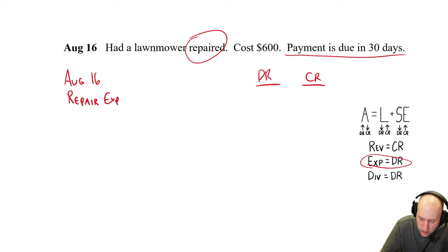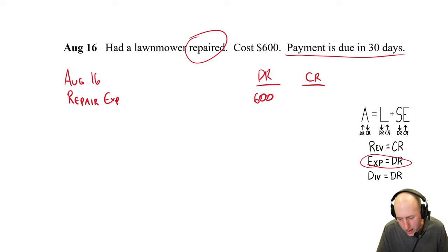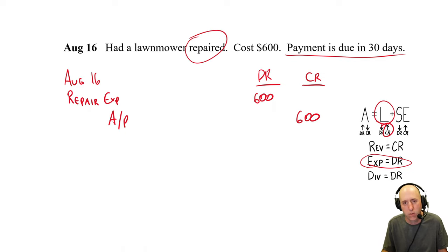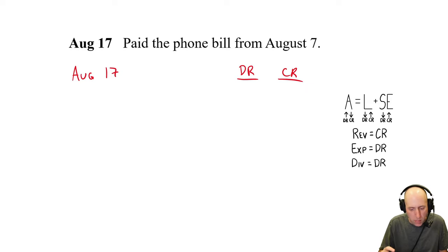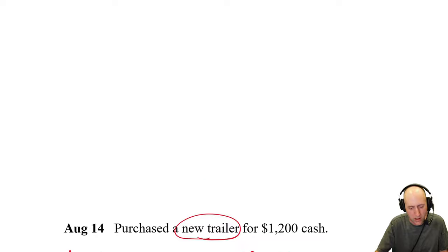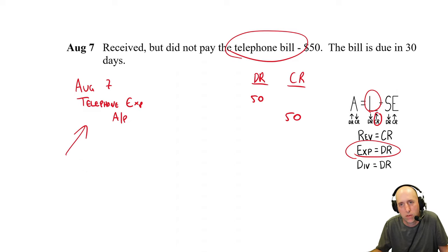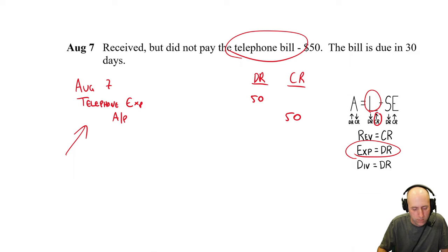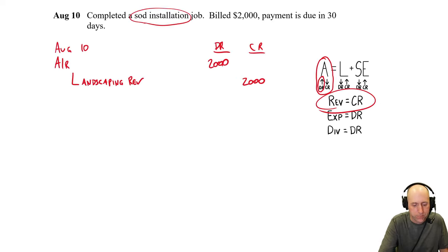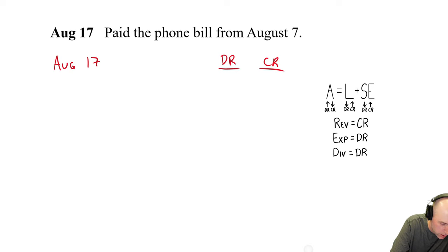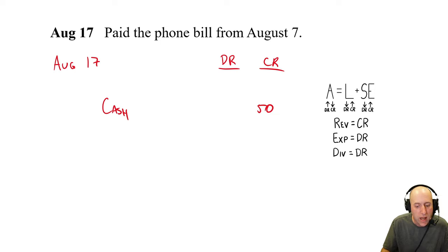August 28th: paid the lawnmower repair bill from August 16th — the $600 repair bill. We're paying it now. You pay a bill, you credit cash — so credit cash $600. The debit is not to repair expense, because we already had the thing repaired and incurred that expense back on August 16th. We debit accounts payable to say this is no longer a liability, no longer payable. August 29th: paid wages to employees $2,000. Credit cash $2,000, debit wages expense $2,000 — a very similar entry to what we did a couple of weeks back.